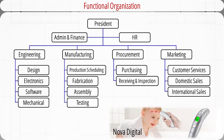Functional organization is a way to manage projects within the existing functional hierarchy of the organization. Once management decides to implement a project, the different segments of the project are delegated to the respective functional units, each unit being responsible for completing its own segment. Project coordination is maintained through normal management channels. This structure is used when the interest of one functional area dominates the project.